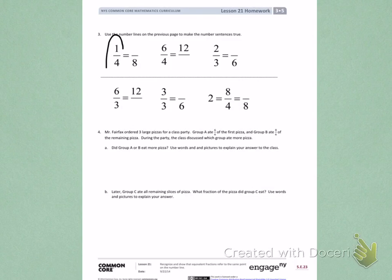Start by finding 1 fourth on your number line. It should be on the number line on the top of your page. If you find 1 fourth, move your finger down to the bottom of that number line. You should see a fraction with the denominator 8. That numerator is 2.